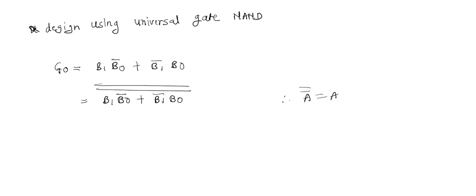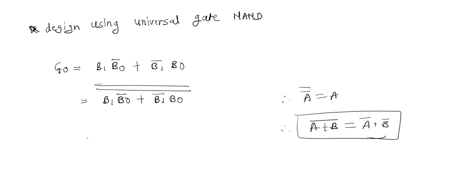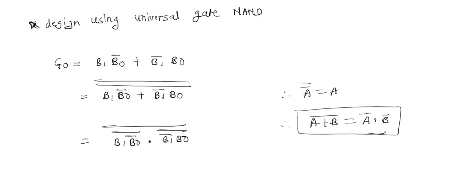So by applying this law, I am rewriting the expression. Now I know that A+B bar is equal to Ā·B̄. So by applying this law, I can rewrite the expression as: (B1·B0̄)·(B1̄·B0) bar, and the whole bar. Now this expression I can implement by using the NAND gate.